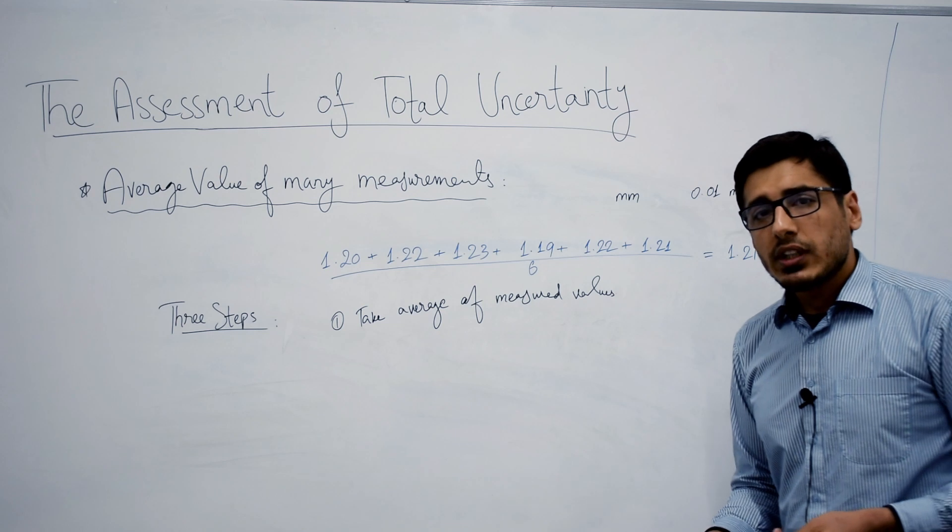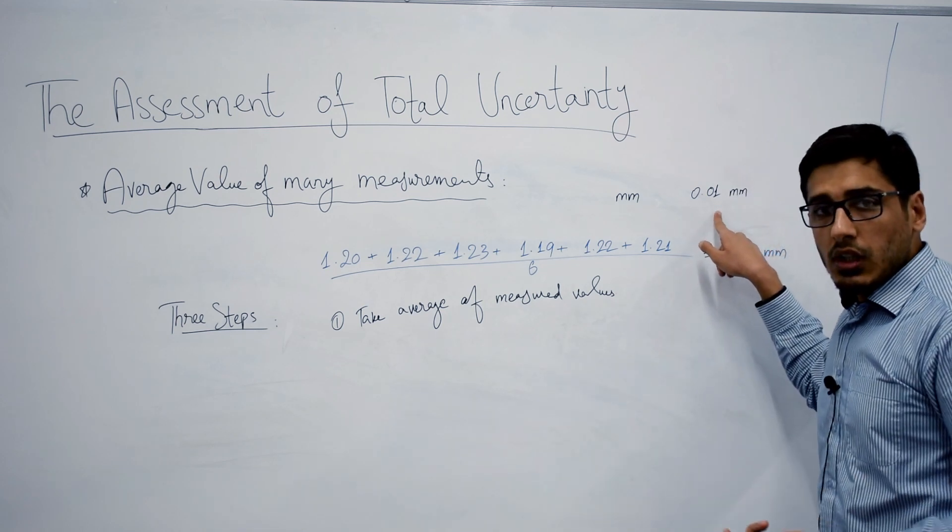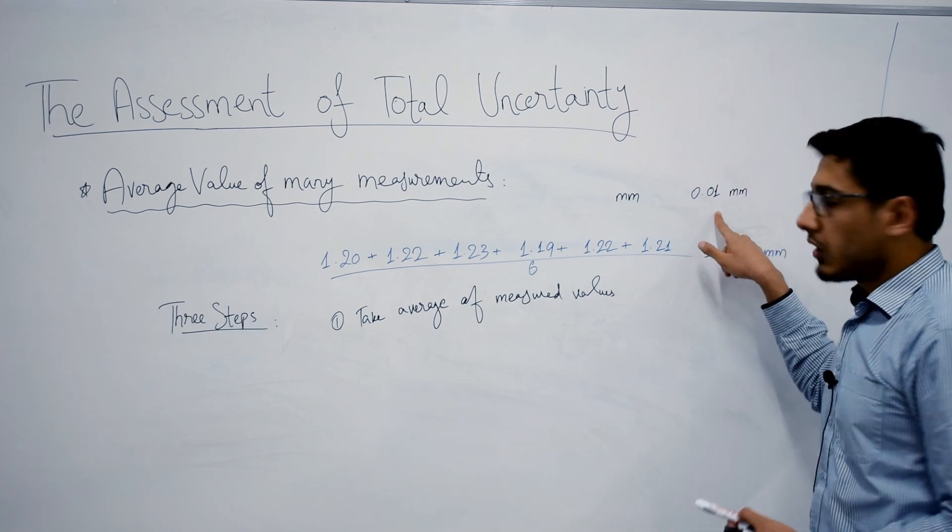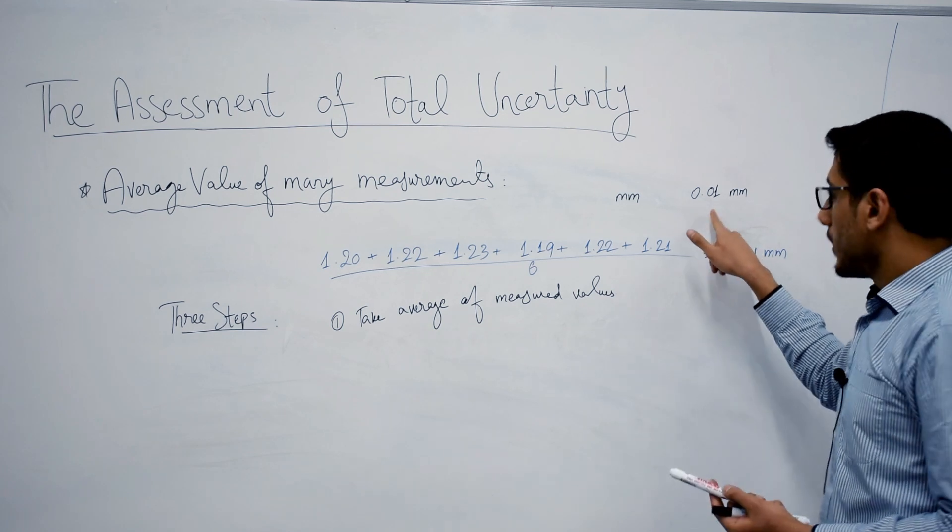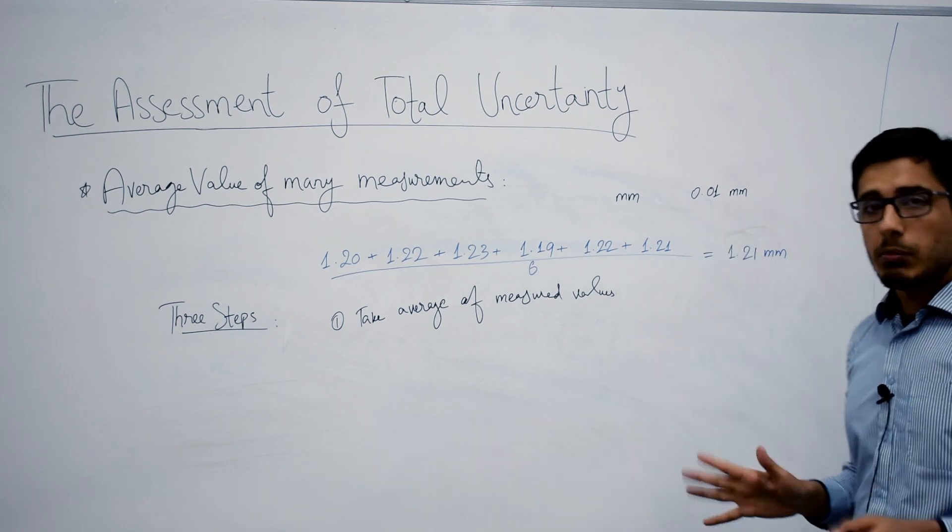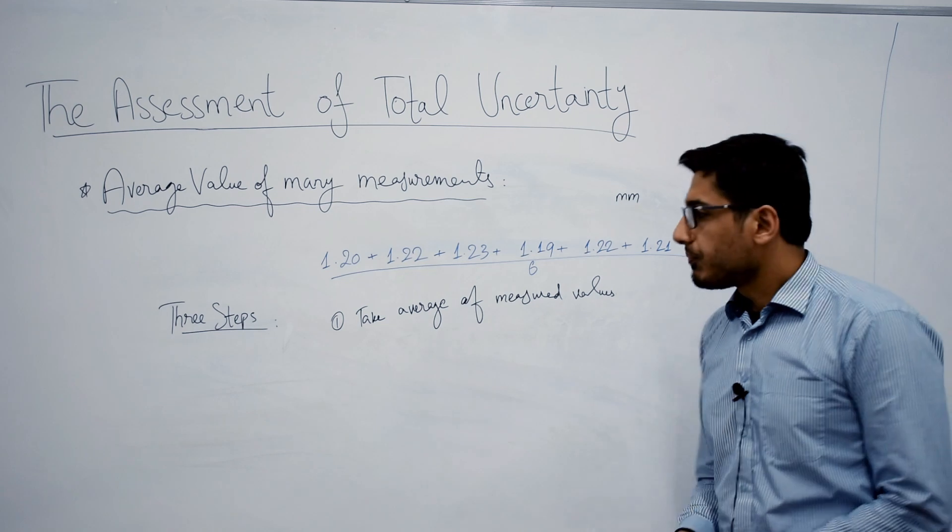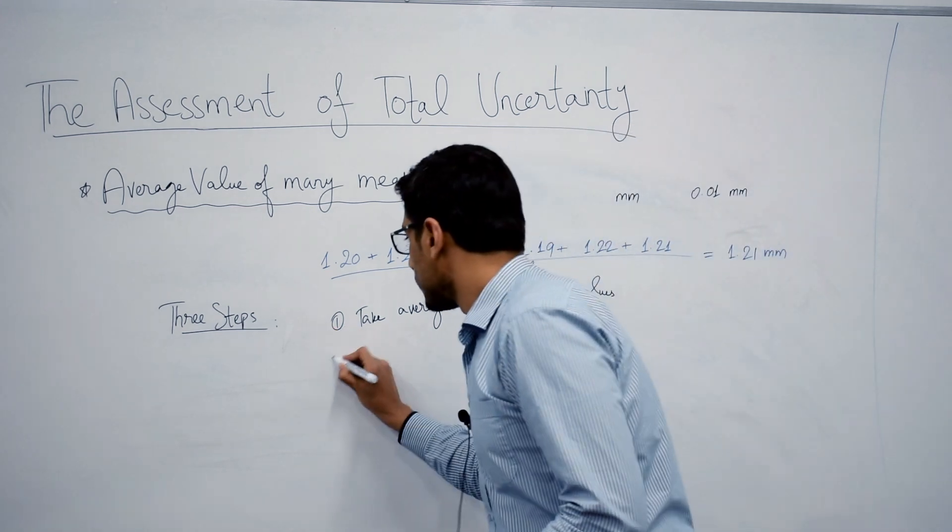At this point, if you know the absolute uncertainty or the least count of your screw gauge, which is 0.01 millimeter, you can write it in front of that, but that would be wrong. What you need to do is go to the next step. The next step is that you need to find the deviation of each measured value from the average value that you have found.